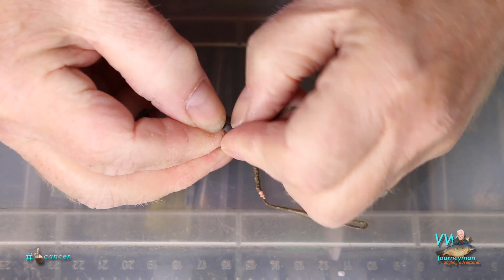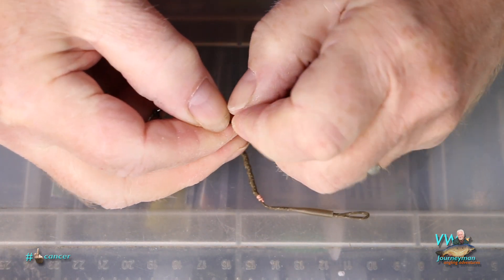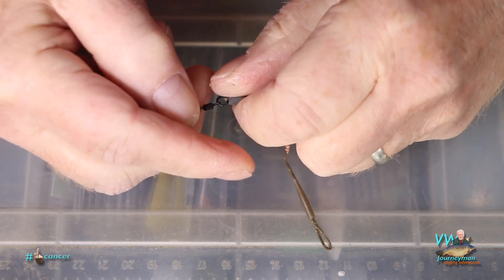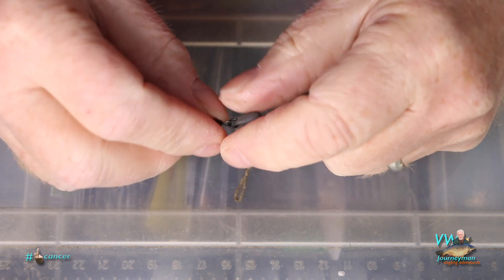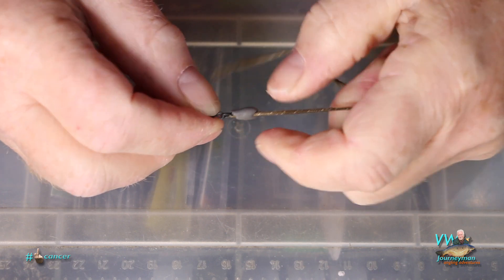Then the last thing I do is mould a bit of tungsten putty around the base of the ring swivel to balance the pop-up.